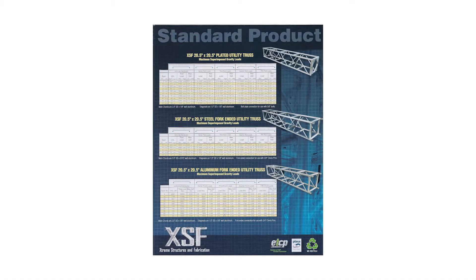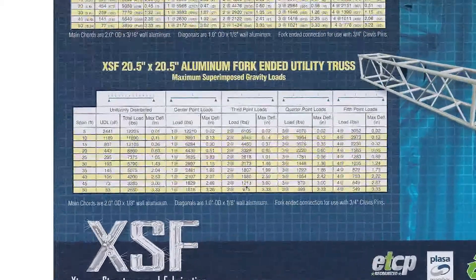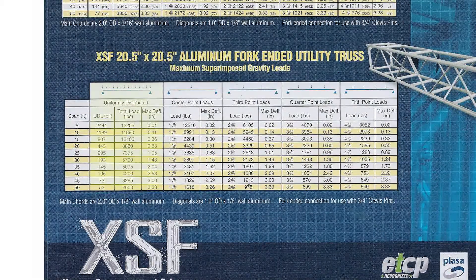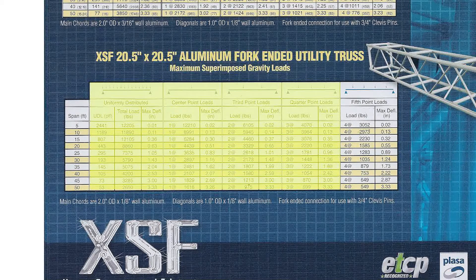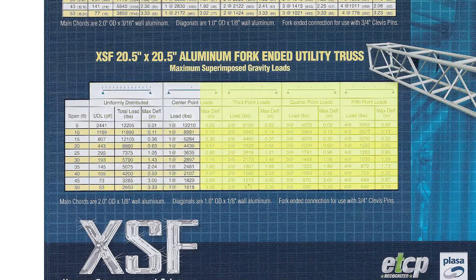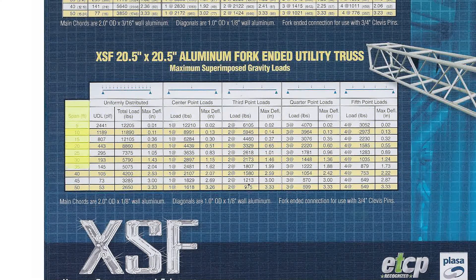Load tables are broken down into five main sections horizontally, each section highlighting a specific load configuration. The vertical columns represent increasing increments of span.